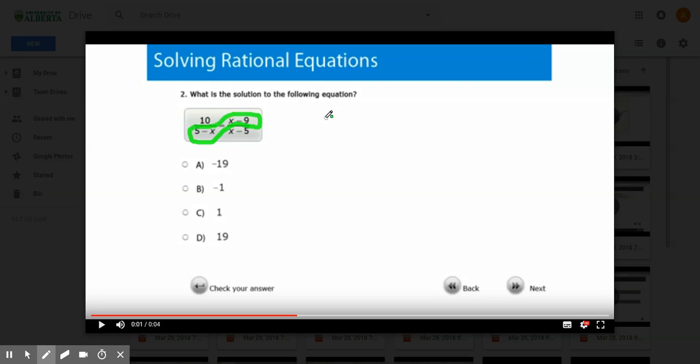In that case, you're going to have 5 minus x times x minus 9, and it's going to equal 10 times x minus 5.